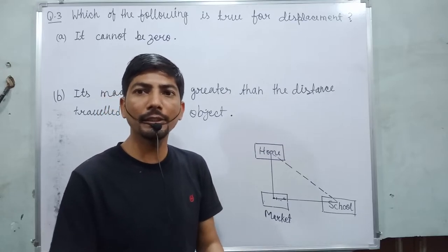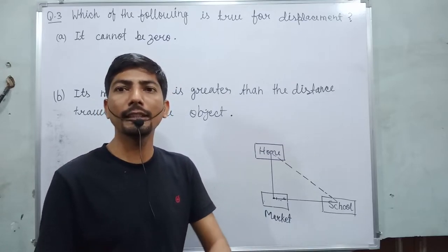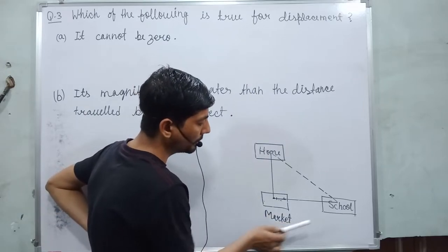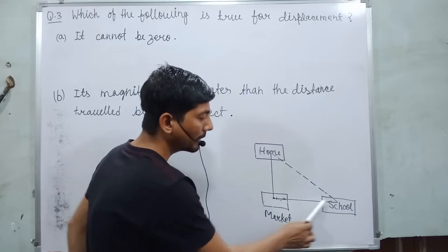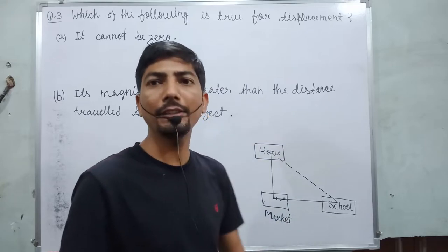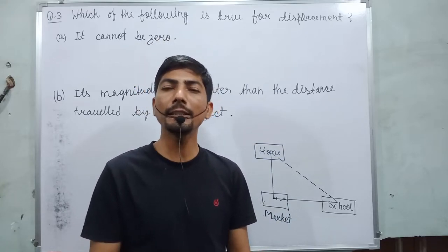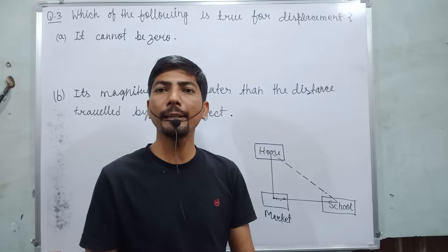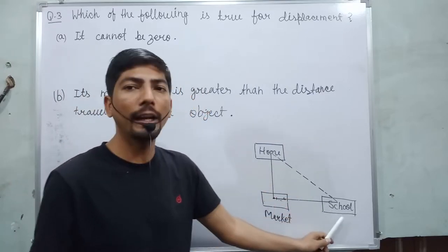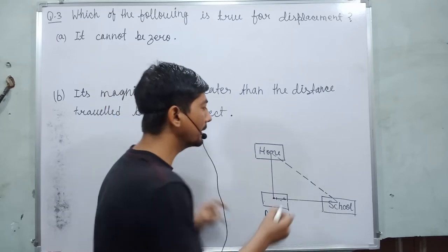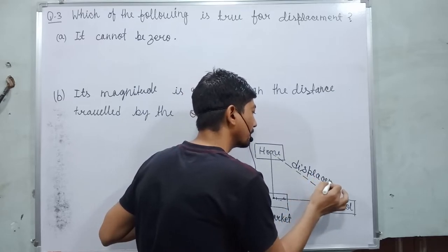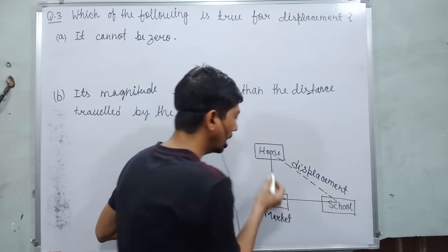So I first tell you or differentiate what is distance and displacement. If you travel from your home to school, this is your distance. Whatever you travel, this is your distance. And the displacement is the shortest straight line path. Displacement is what? Shortest straight line path between two points. So this is the shortest straight line path between your home and your school. So this is called displacement. And this is your distance.